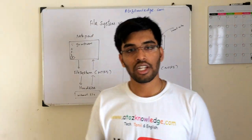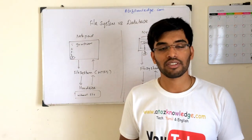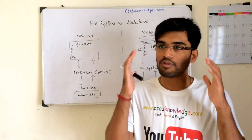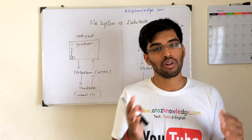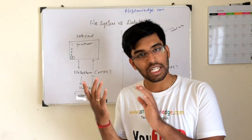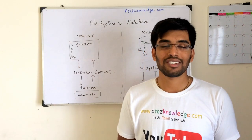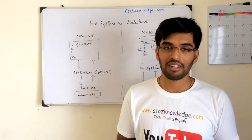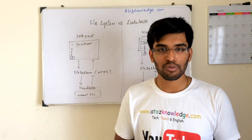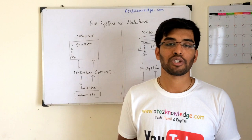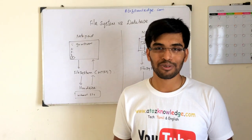So those are two major differences I explained. Like this, we have many other differences. The key takeaway is that data stored via an RDBMS or database is different from storing it directly to a file system. Thanks for watching a2zknowledge.com. If you like this video, subscribe to my channel. We provide videos in many other technologies — check my YouTube channel, the link is in the description. We provide videos in two languages: English and Tamil. Thanks for watching!